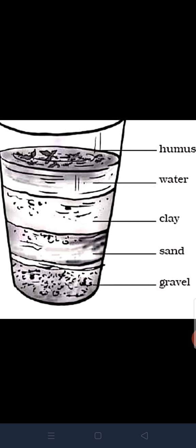At the topmost layer, we will see the humus, which is the lighter one particles present in the soil. After that, we will see a layer of water.